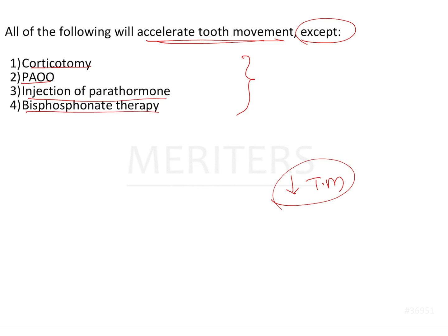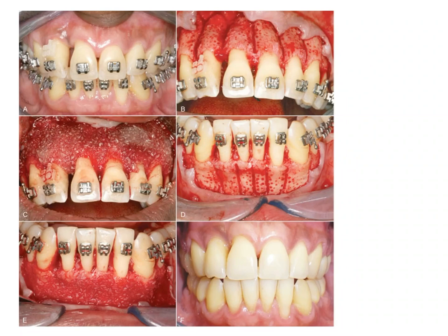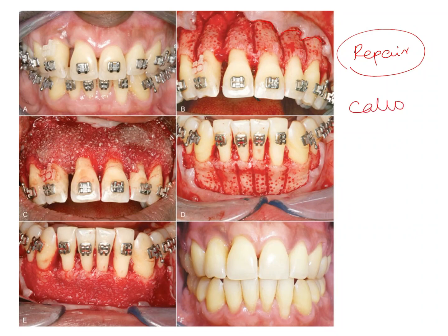Corticotomy is basically the removal of the cortical bone. First the flap is raised, and surgical cuts are made between the bone to remove or fracture the cortical bone. The aim here is to traumatize the bone so that it undergoes a period of repair. During the repair phase, similar to fracture repair, there is laying down of the bony callus, which is soft.